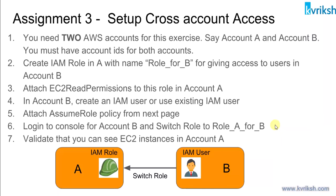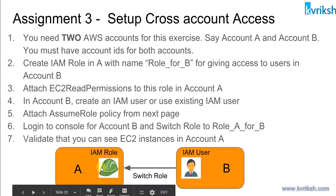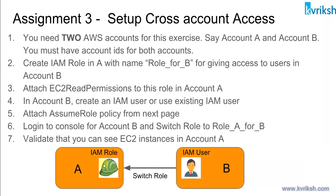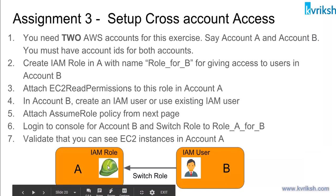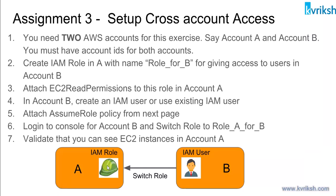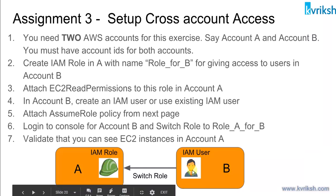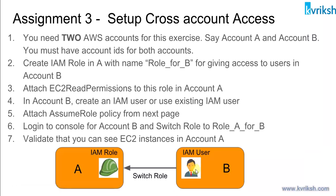For this we need two AWS accounts. The process is: in Account A we will create an IAM role, and while creating it we will specify that this role is for Account B. We will then attach IAM permissions to this role — the permissions you want to grant to users in Account B. For example, if Account A is a production account and you just want to give read-only access to see the running EC2 instances, you attach EC2 read-only permissions. Once done, you also have to grant users in Account B permissions to assume the role in Account A.